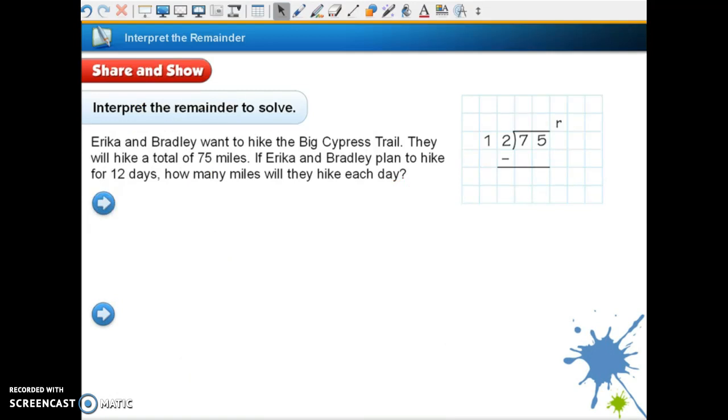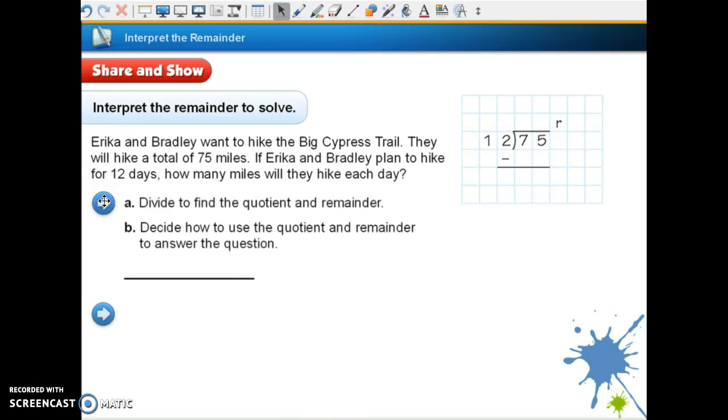Okay, we're on the Share and Show on page 89, and this is number 1. Erica and Bradley want to hike the Big Cypress Trail. They will hike a total of 75 miles. If Erica and Bradley plan to hike for 12 days, how many miles will they hike each day? Divide to find the quotient and the remainder. So we have to say, how many 12s are in 75? In this case, there are 6. And 6 times 2 is 12. I'd have to regroup a 1. 6 times 1 is 6, plus 1 is 7. So then I would have a remainder of 3.